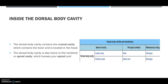The dorsal body cavity will house the cranial cavity as well as the spinal cavity. The cranial cavity contains the brain and is located on the head, and the dorsal cavity is also home to the vertebral or spinal cavity, which houses your spinal cord.